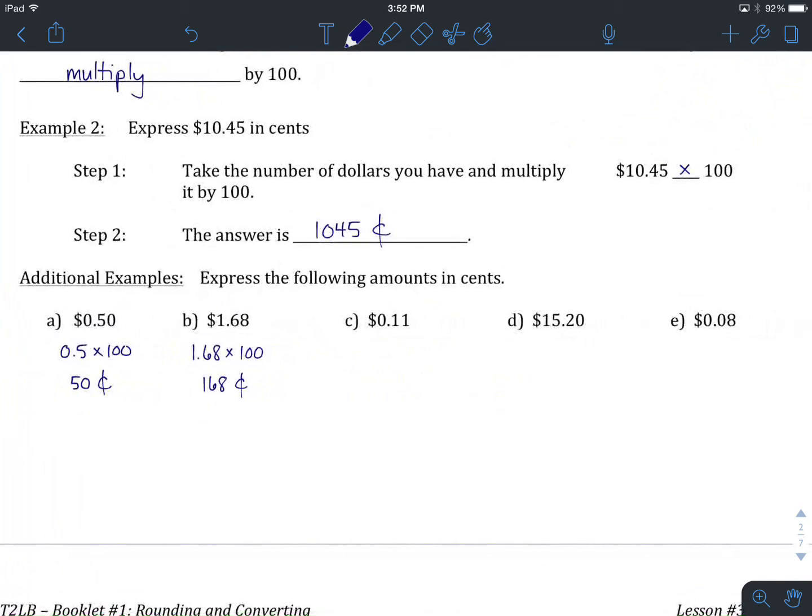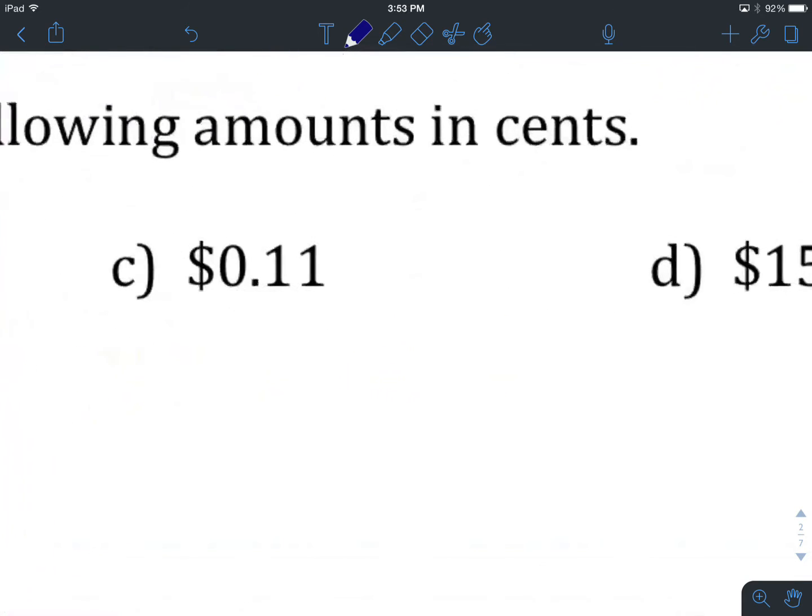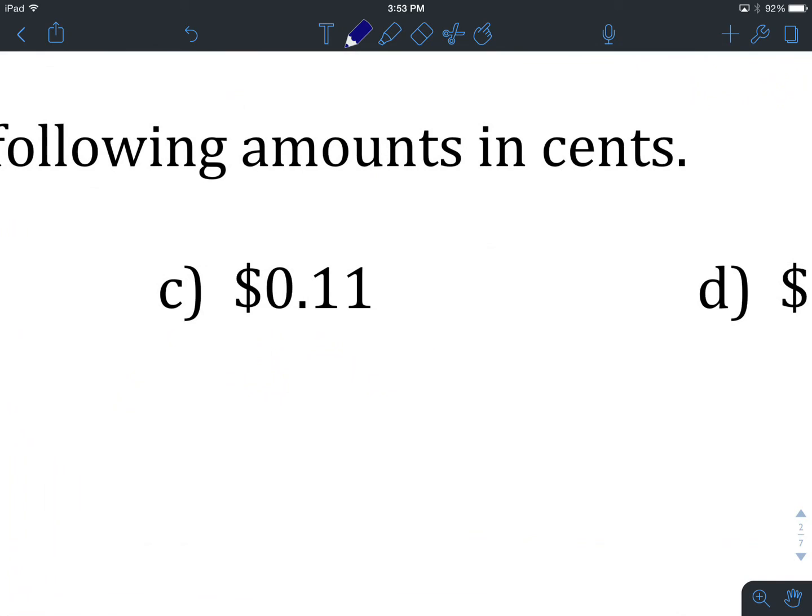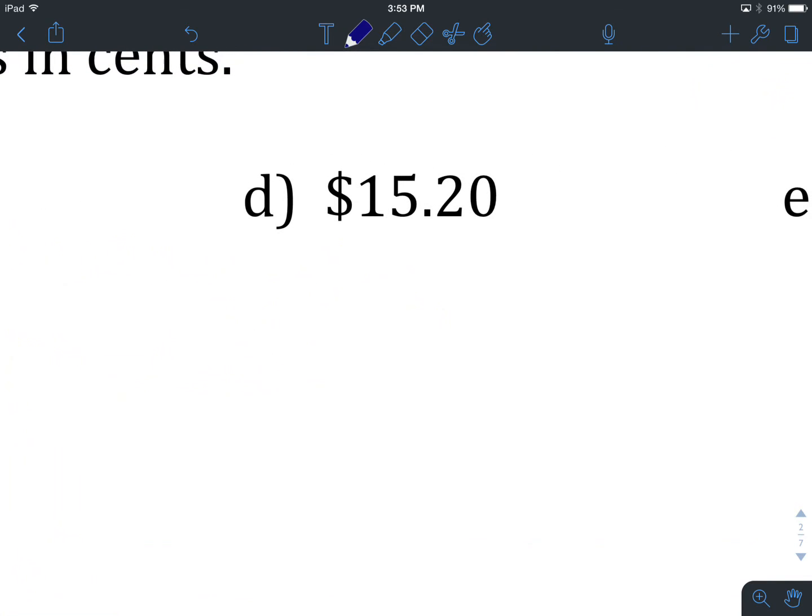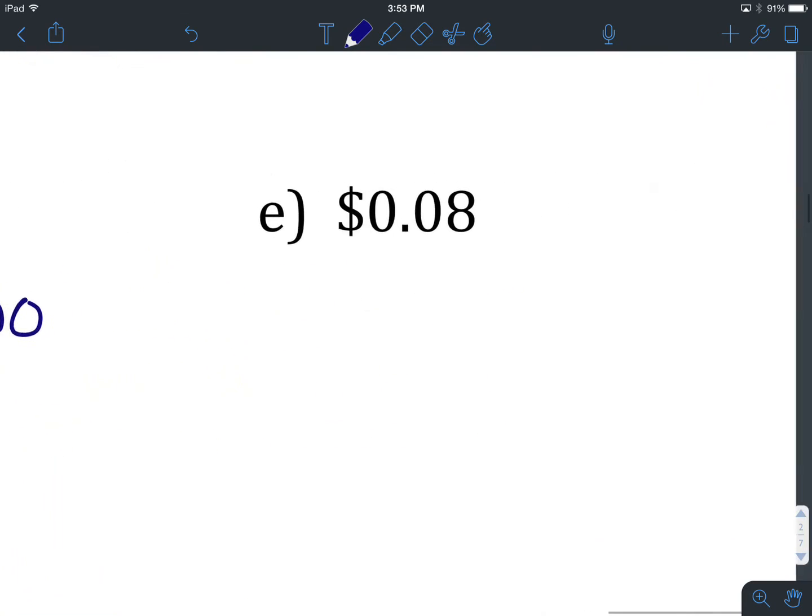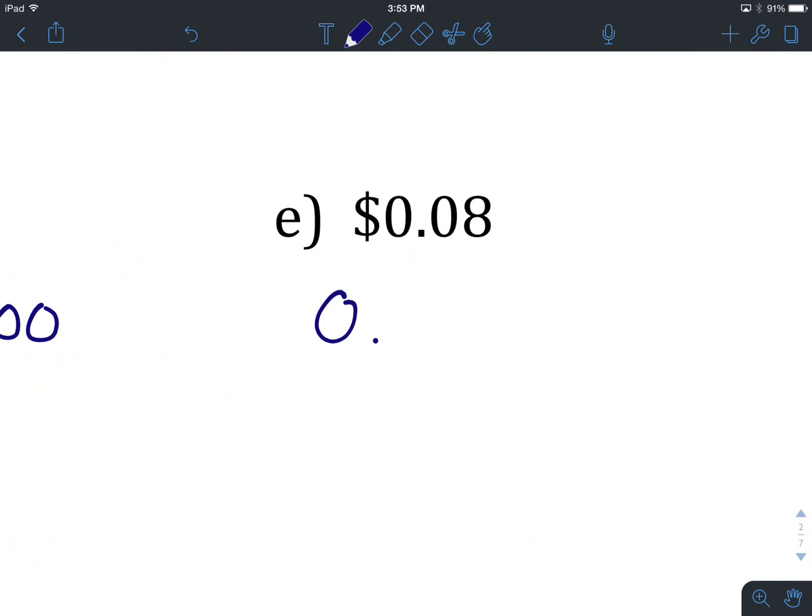Welcome back. You've tried C, D, and E. Let's see how you did. We have $0.11. We write that amount, multiply it by 100 to turn it into cents, which gives us 11 cents. $15.20: we write down the amount we're given, 15.20, multiply that by 100, giving us 1,520 cents. Last but not least, $0.08. We write down the amount in dollars, multiply it by 100, giving us 8 cents.